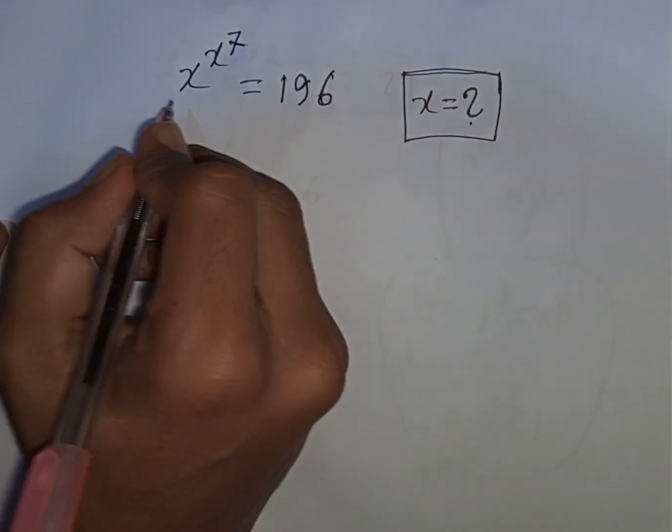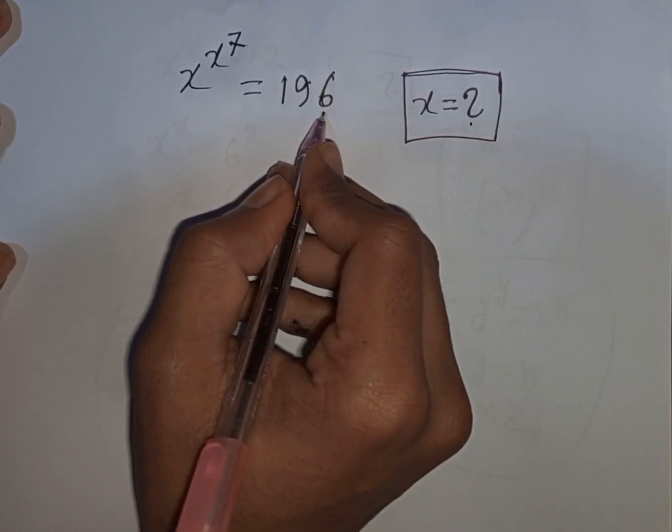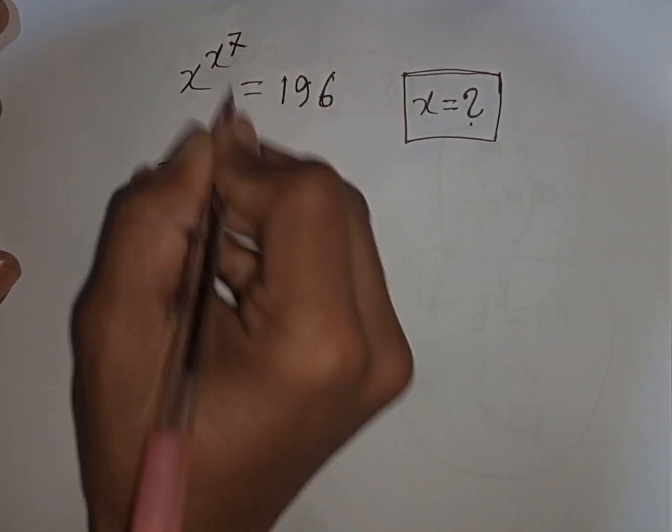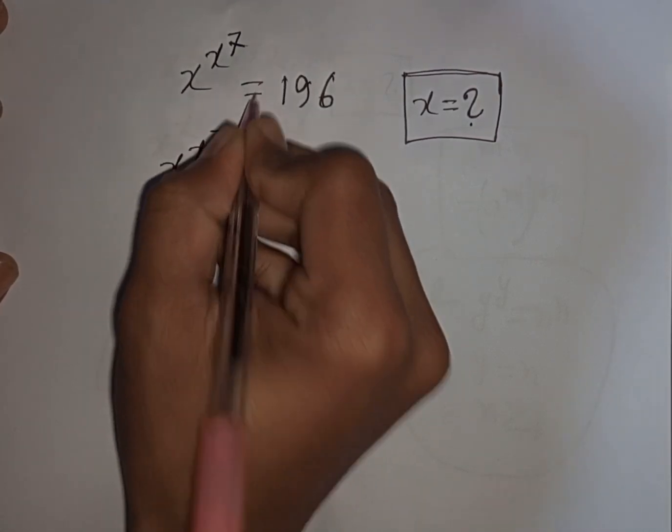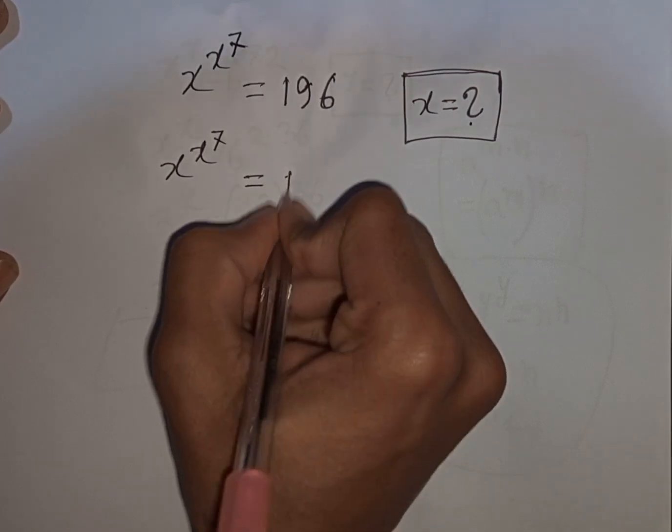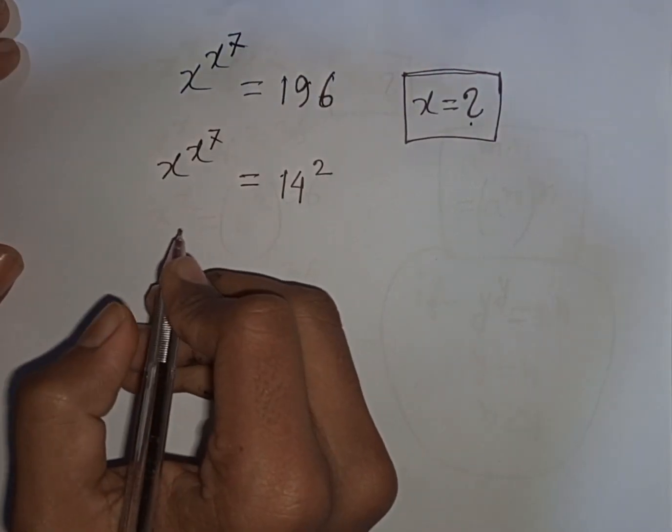How to solve x power x power 7 equals 196. Find the value of x. So we have x power x power 7 equals 196, which can be written as 14 squared. Now we multiply by power of 7 on both sides.